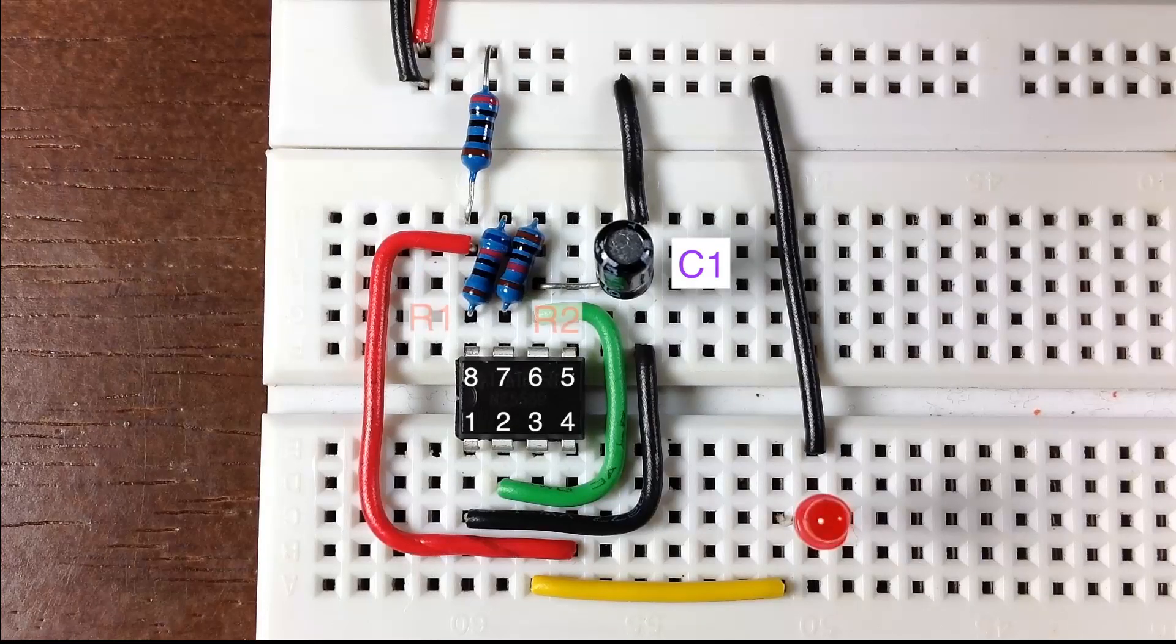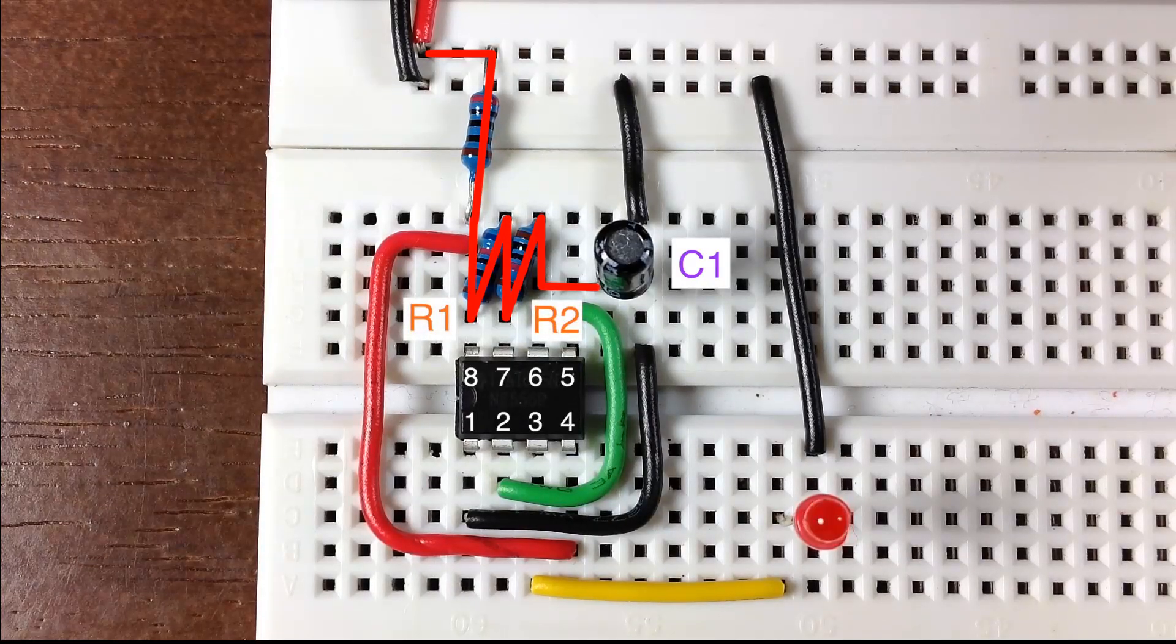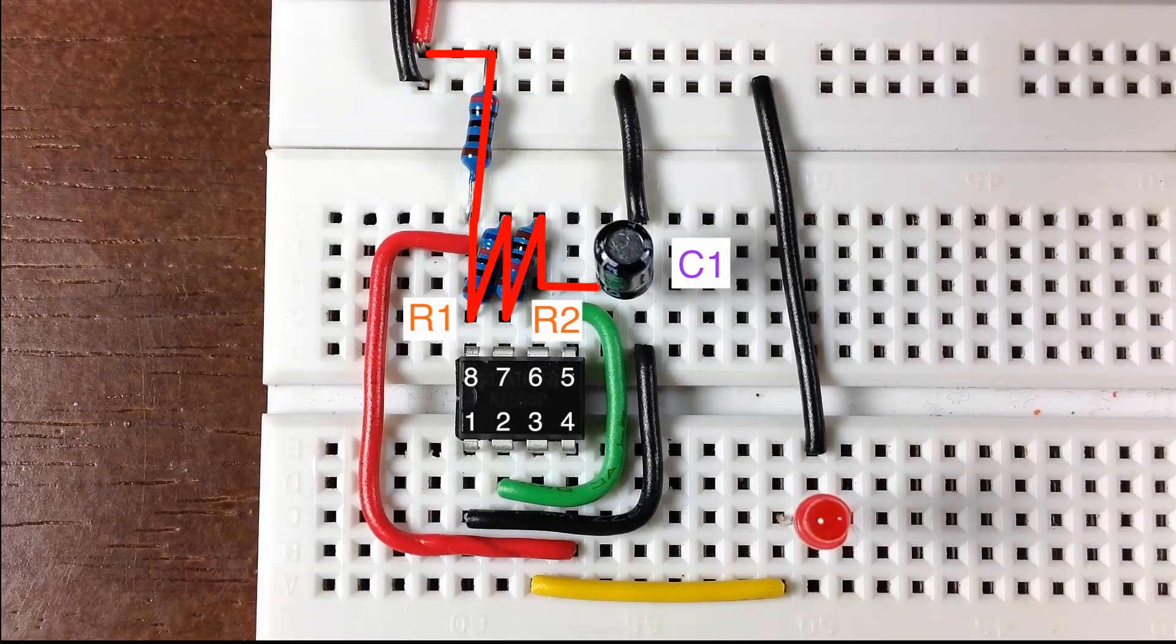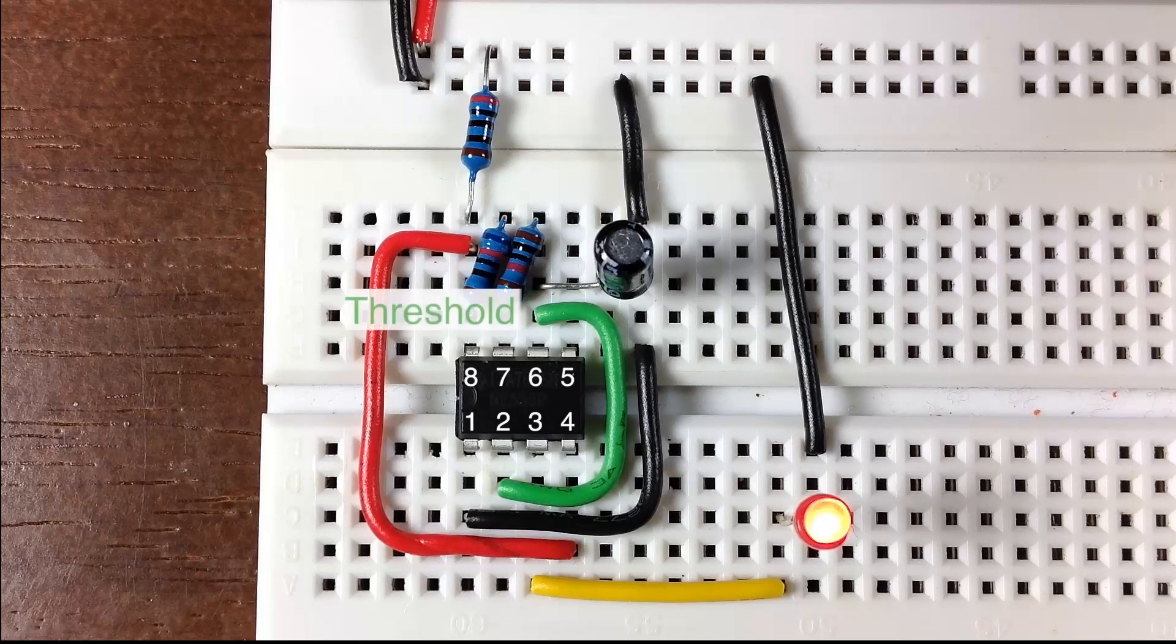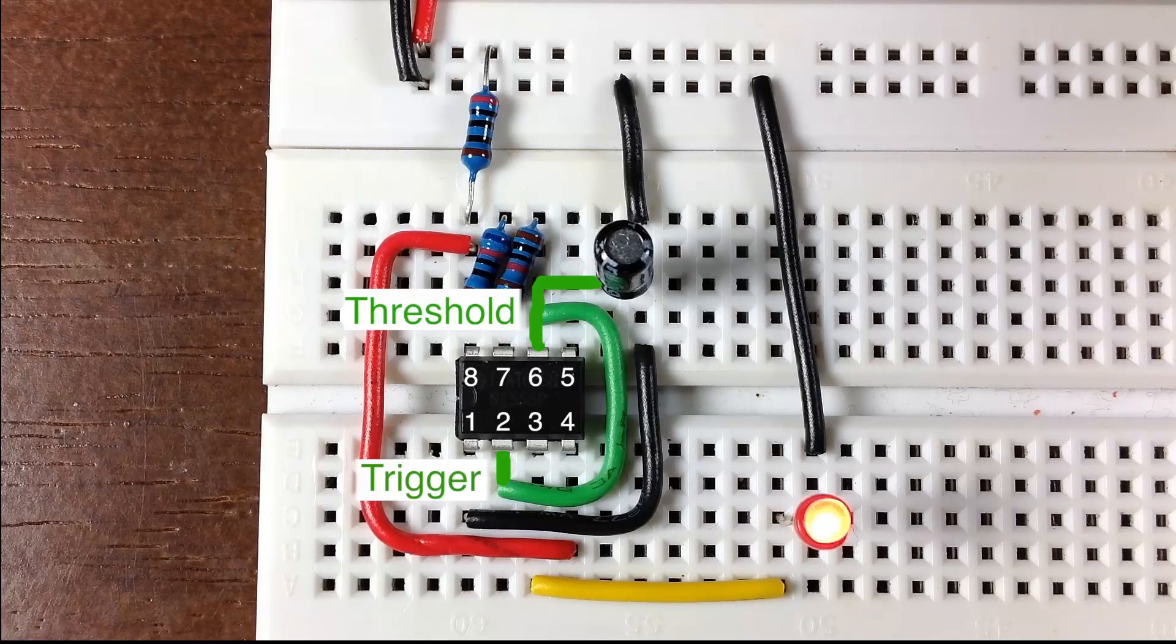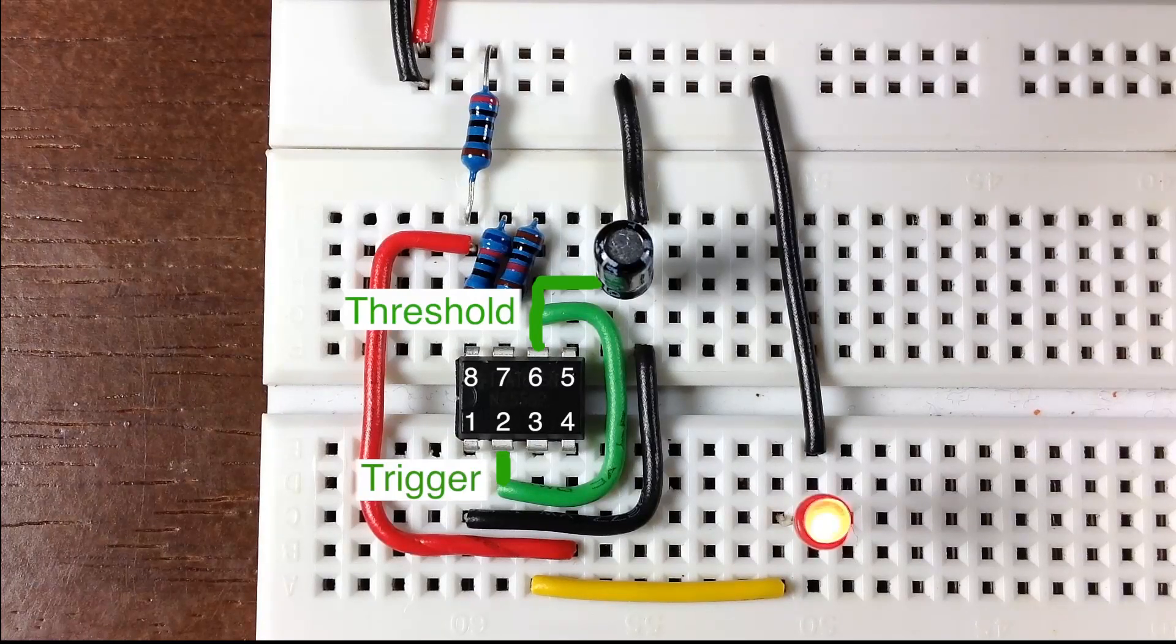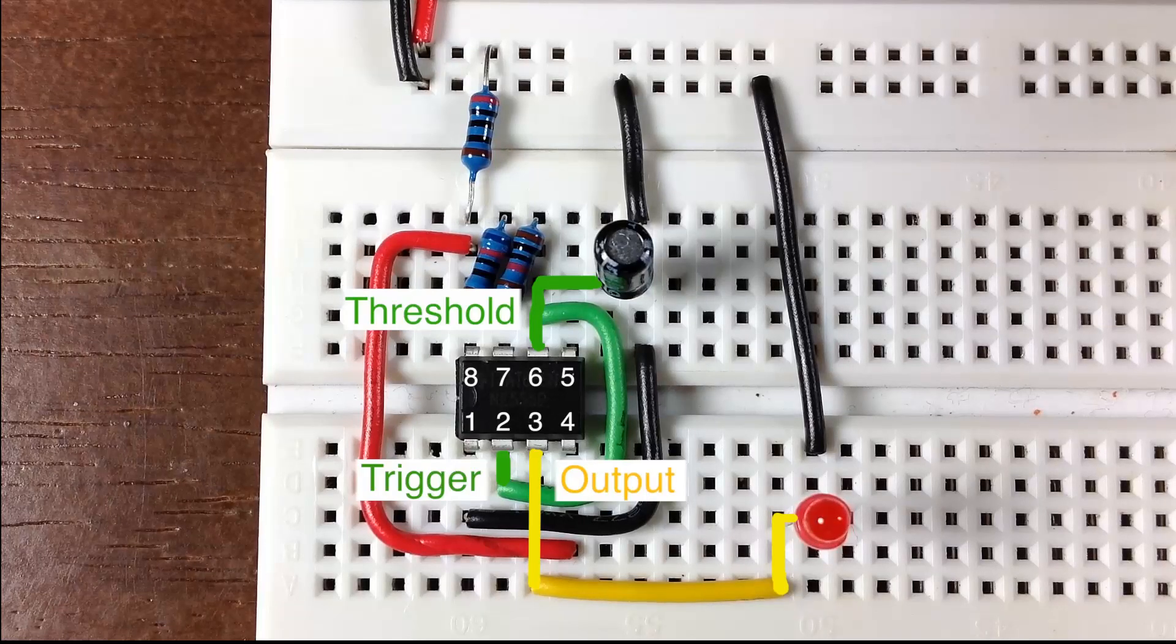Capacitor C1 is charged from the power source through resistors R1 and R2. The charge voltage is monitored by the threshold, and the discharge voltage is monitored by the trigger. During the time that the capacitor is charging, the output is high.